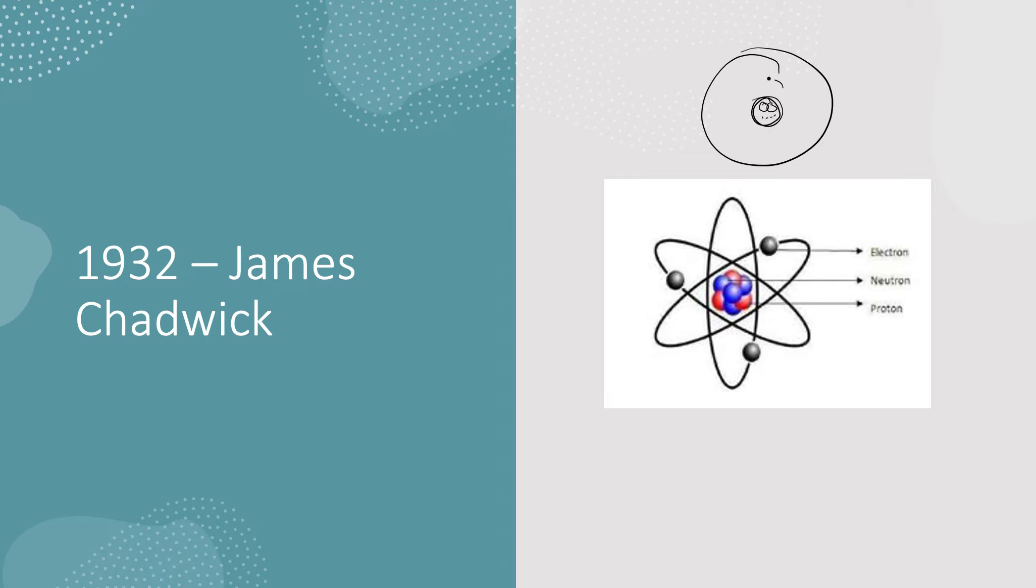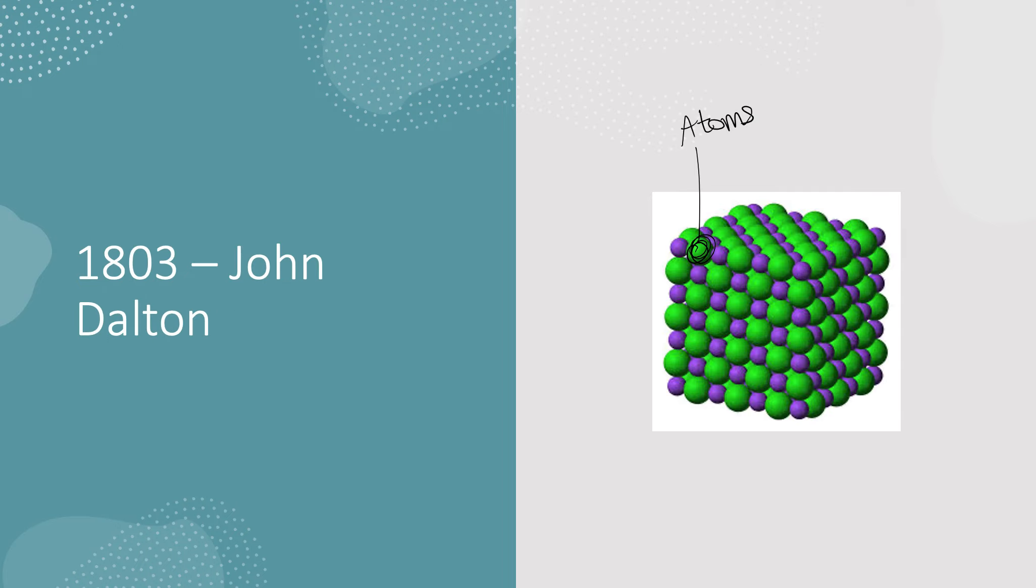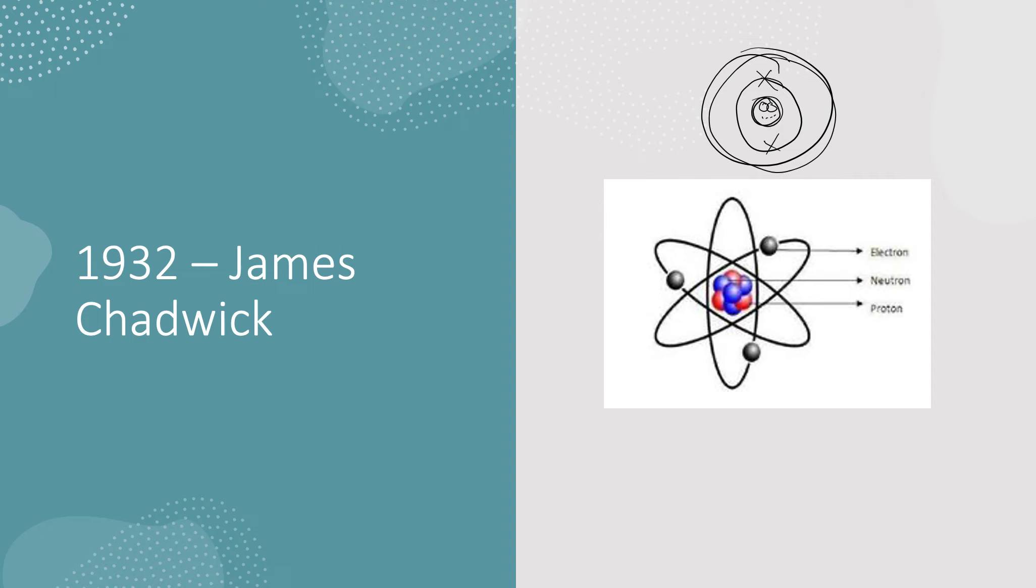And we have these electron shells orbiting the nucleus with electrons on them. And that is how the atom has evolved from the time period 1803 to 1932.